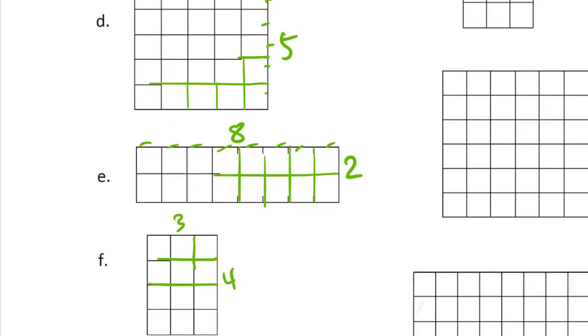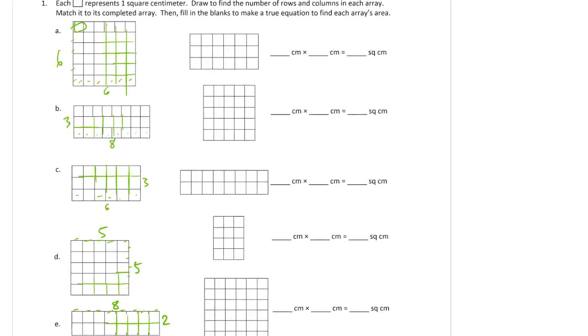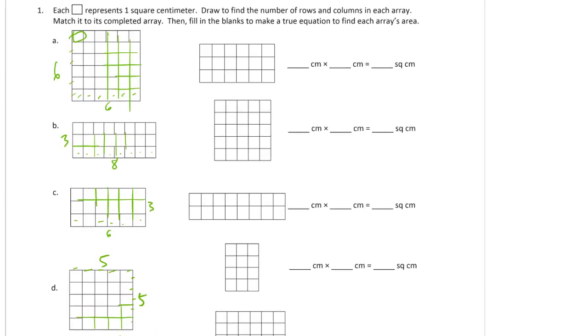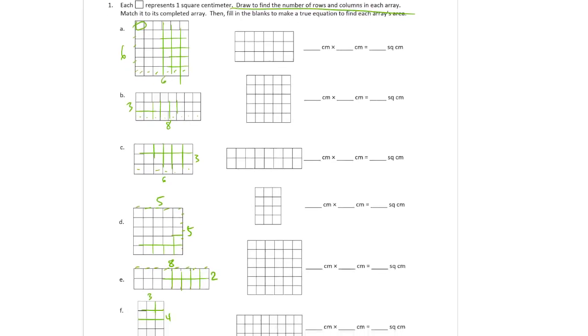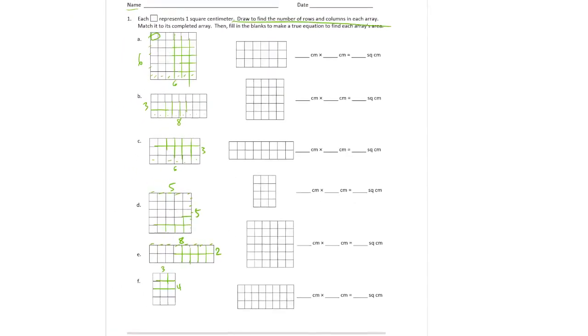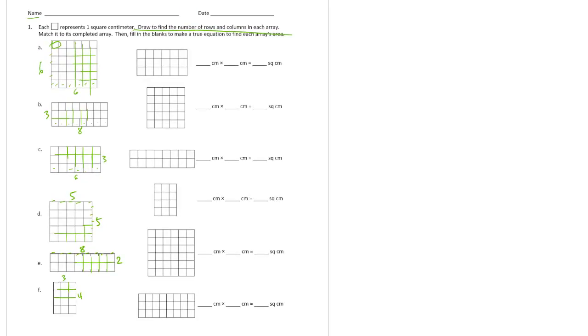And now I can zoom back out. Okay, so draw to find the number of rows and columns in each array. So we drew that. And I labeled all the rows and columns. And then we're going to match it to its completed array. These are both 3 by 4.